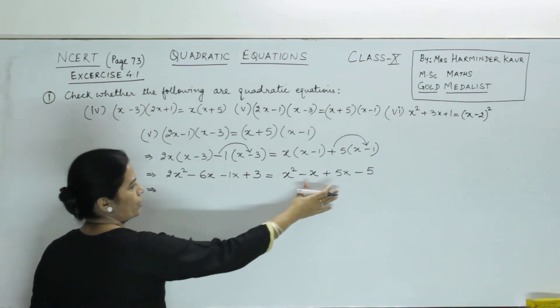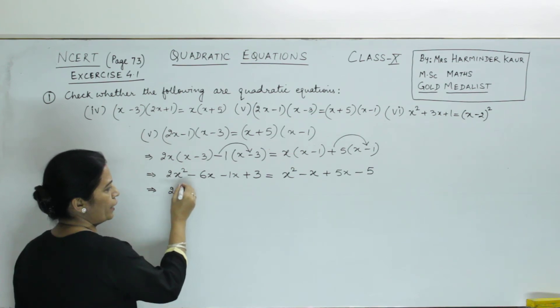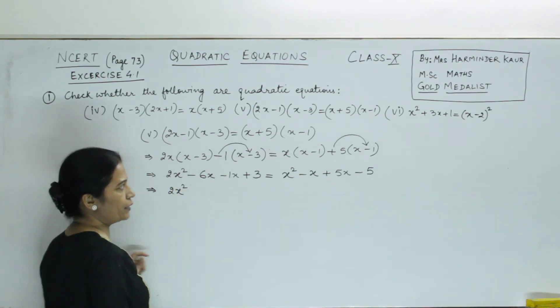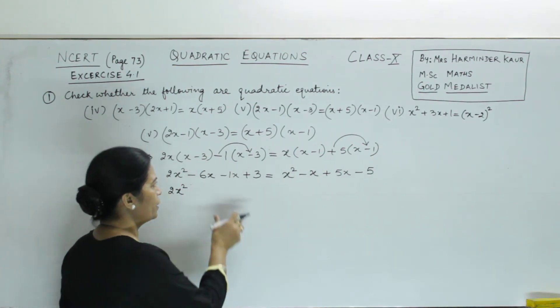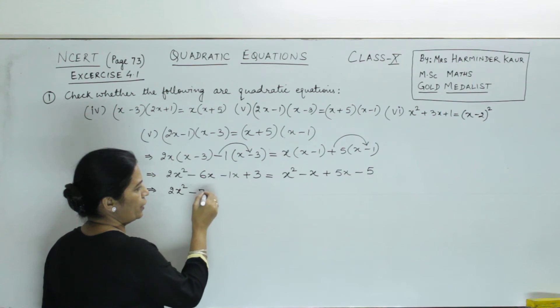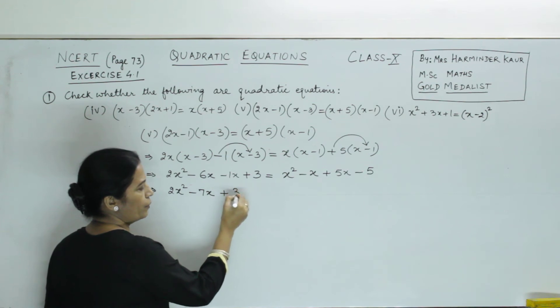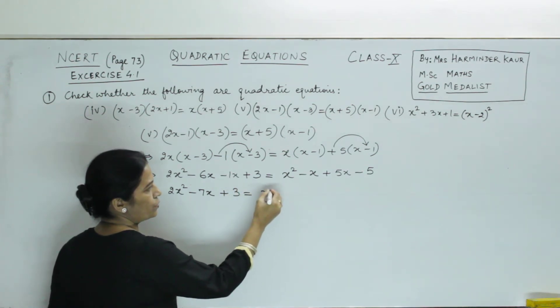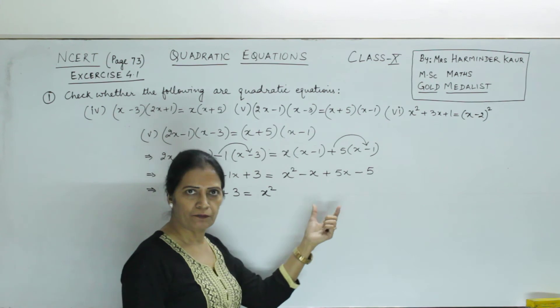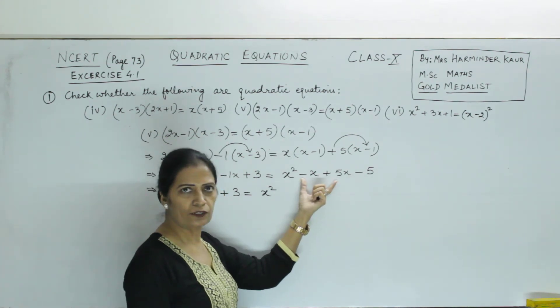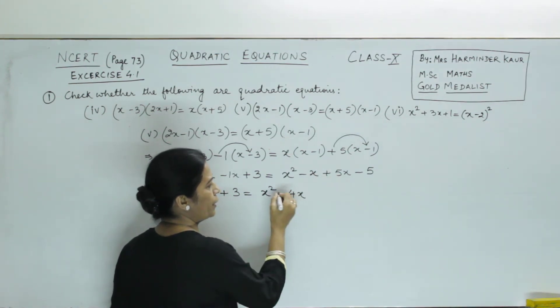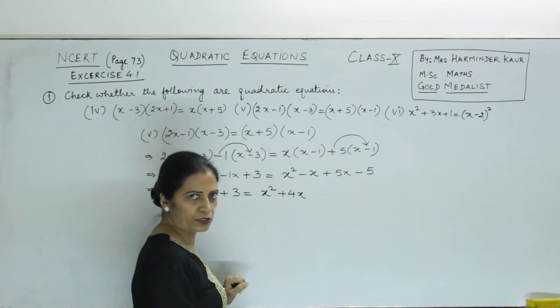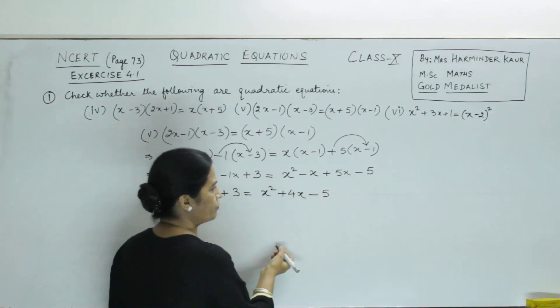Now, on this side there are x terms, here also x terms. So we collect them on their corresponding sides. Left side and right side. Minus 6x and minus 1x will be minus 7x. Both negative, add and sign minus. Plus 3 = x². Minus x and plus 5x. Because opposite sign, subtract. It becomes 4x. Sign of larger number is positive. And minus 5.